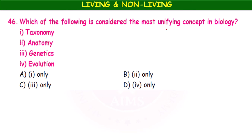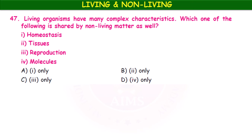Which of the following is considered the most unifying concept in biology — taxonomy, anatomy, genetics, or evolution? The most unifying concept is evolution, option D. Living organisms have many complex characteristics. Which one of the following is shared by non-living matter as well — homeostasis, tissues, reproduction, or molecules? The answer is molecules, as atoms combine to form molecules and molecules combine to form compounds.